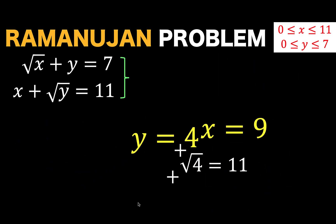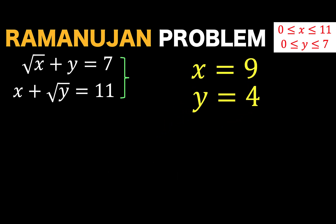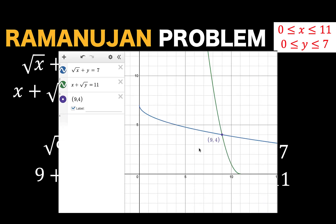Let's check if these values are correct. Substituting in the original equation, if x equals 9 and y equals 4, we have these results. And looking at the graph now, using Desmos graphing calculator, we now have this ordered pair 9 and 4 as the solution to this Ramanujan's problem.